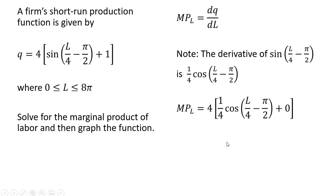So simplifying a little bit, this four times one-fourth cancels, and we have the marginal product of labor.